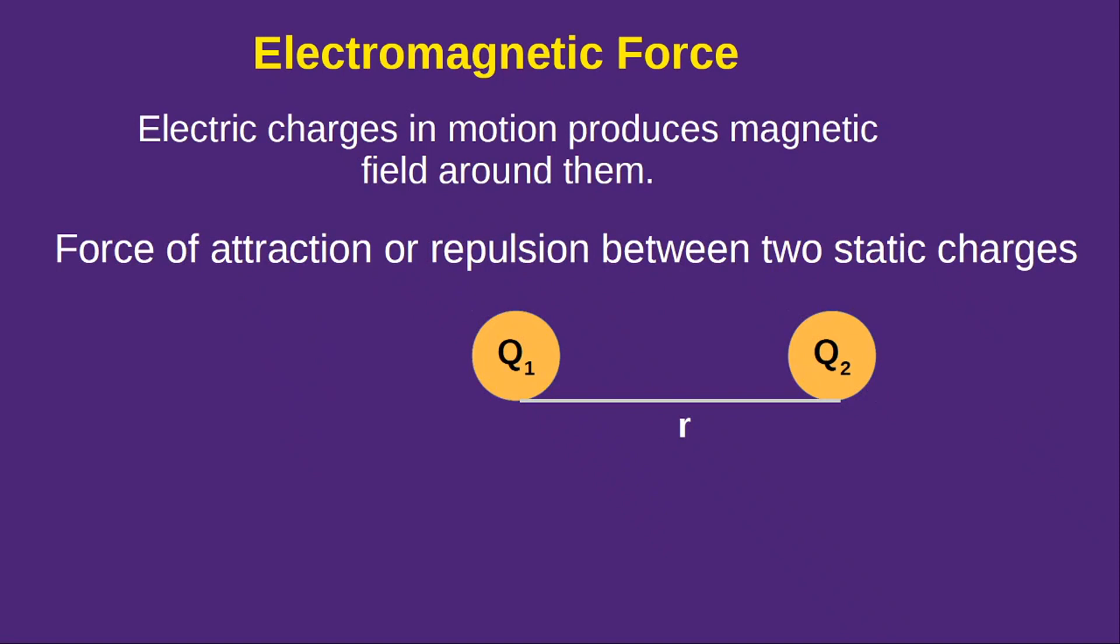Now if you consider two charges q1 and q2 separated by a distance r, then the force of attraction or repulsion between these two static charges is given by f equal to k q1 q2 by r squared. This equation looks like the expression for the gravitational force.